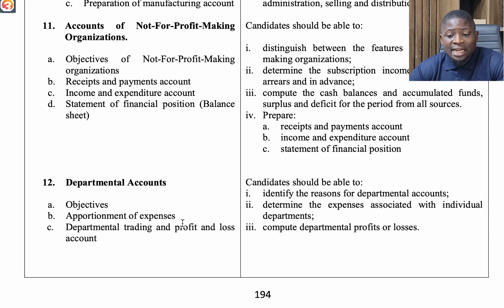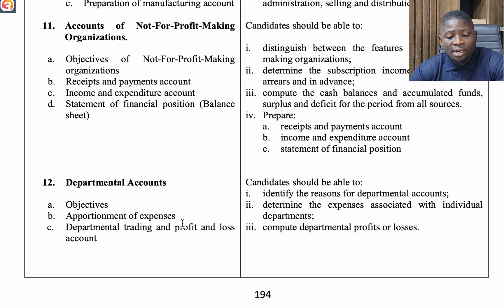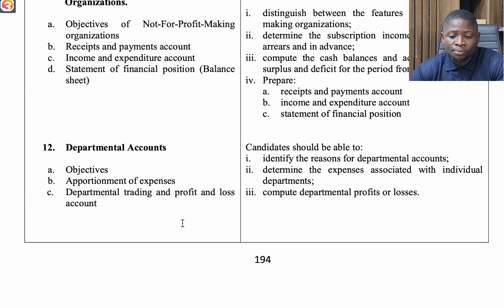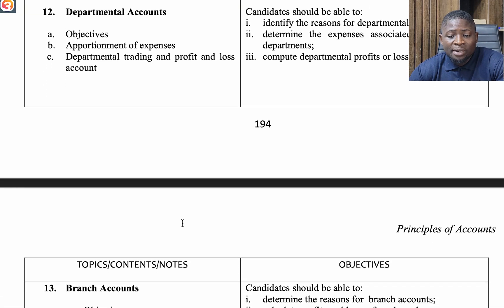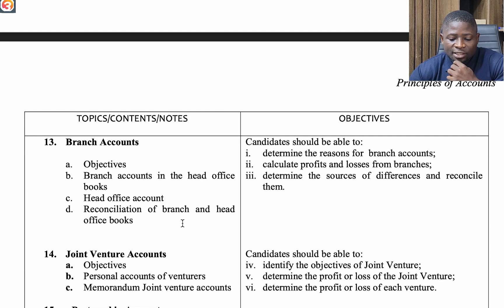The eleventh topic is Accounts of Not-for-Profit Making Organizations. Look at objectives of not-for-profit making organizations, receipts and payments accounts, income and expenditure accounts, and statement of financial position. The twelfth topic is Departmental Accounts — look at objectives, apportionment of expenses, and departmental trading and profit and loss accounts.